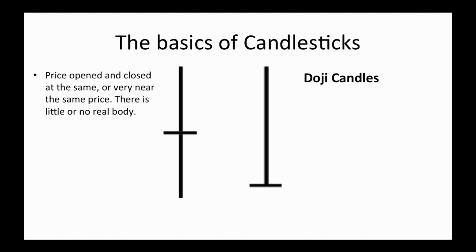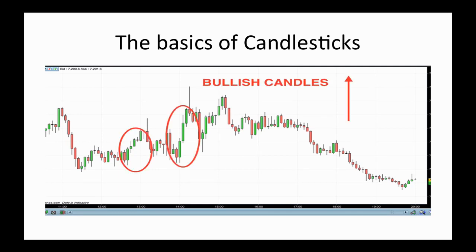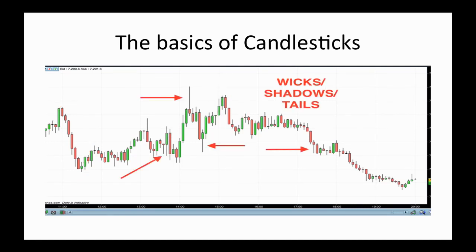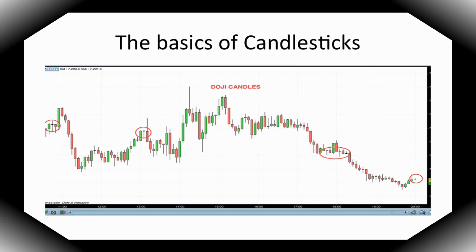And that is the basic foundation of reading a chart. If we reintroduce the chart from earlier, you'll see that all of the information present is simply based around price action. Here we can see some bullish candles and the market pushes higher as price increases. Bearish candles show price decreasing, so the market is falling. You can also see that the vast majority of candles have shadows, tails, or wicks, usually visible on both ends. And finally, we can see some doji candles where price has opened and closed at the same or very near to the same price.